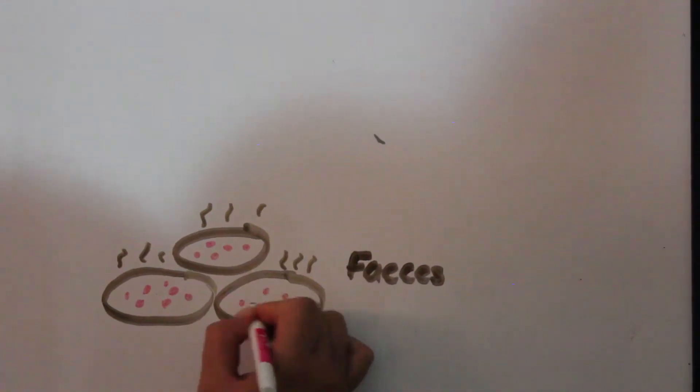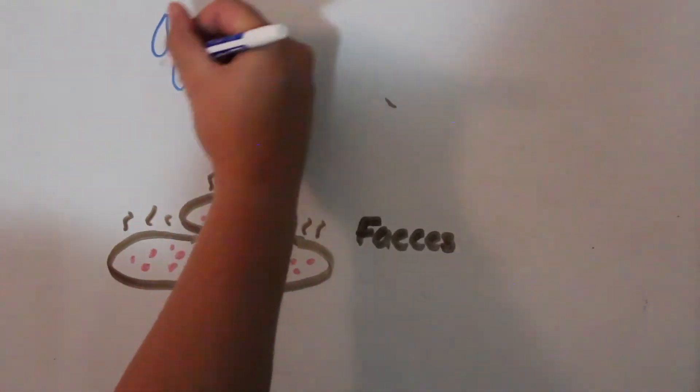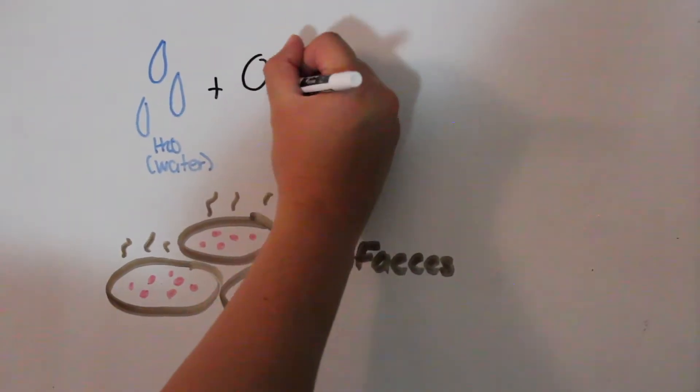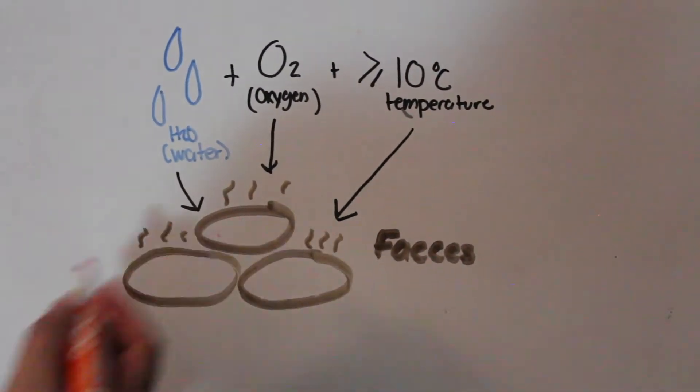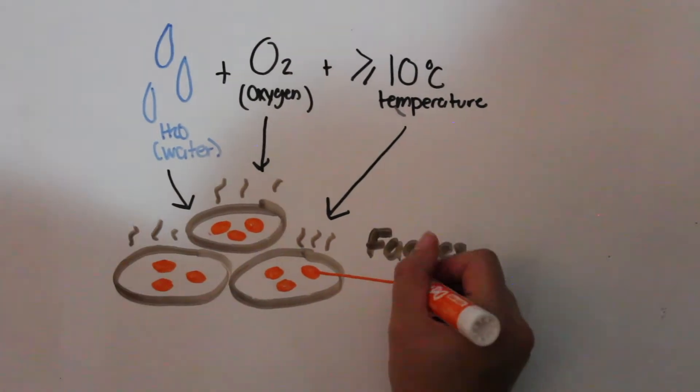In the presence of water and oxygen and if the temperature is equal to or greater than 10 degrees Celsius, the eggs within the feces develop into myricidium. The optimal temperature for development is 26 degrees Celsius.